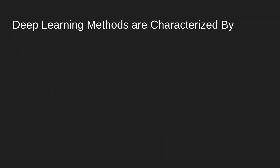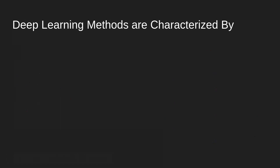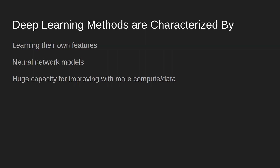While this is a deep learning method, it's the shallowest possible version. Deep learning methods learn their own hidden representations — characteristics about the data you don't have to program in by hand. They are, by and large, neural network models — collections of weights. They have huge capacity for improving with more compute and more data, and don't tend to saturate as fast as basic machine learning models. That scalability is what makes deep learning very popular.